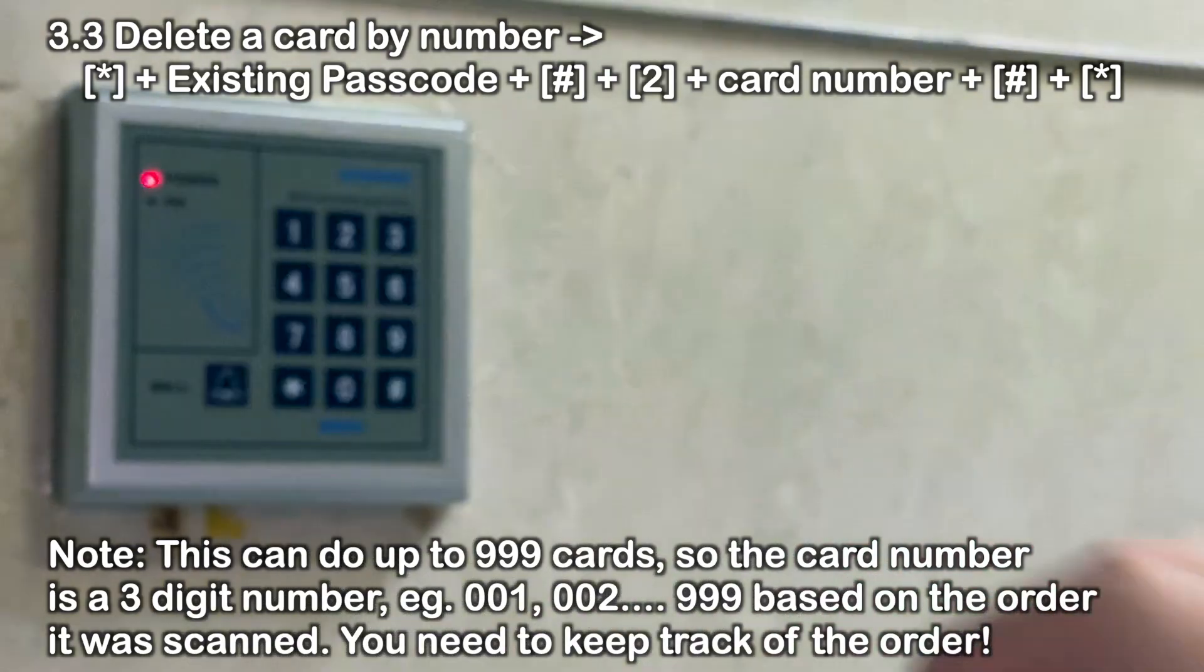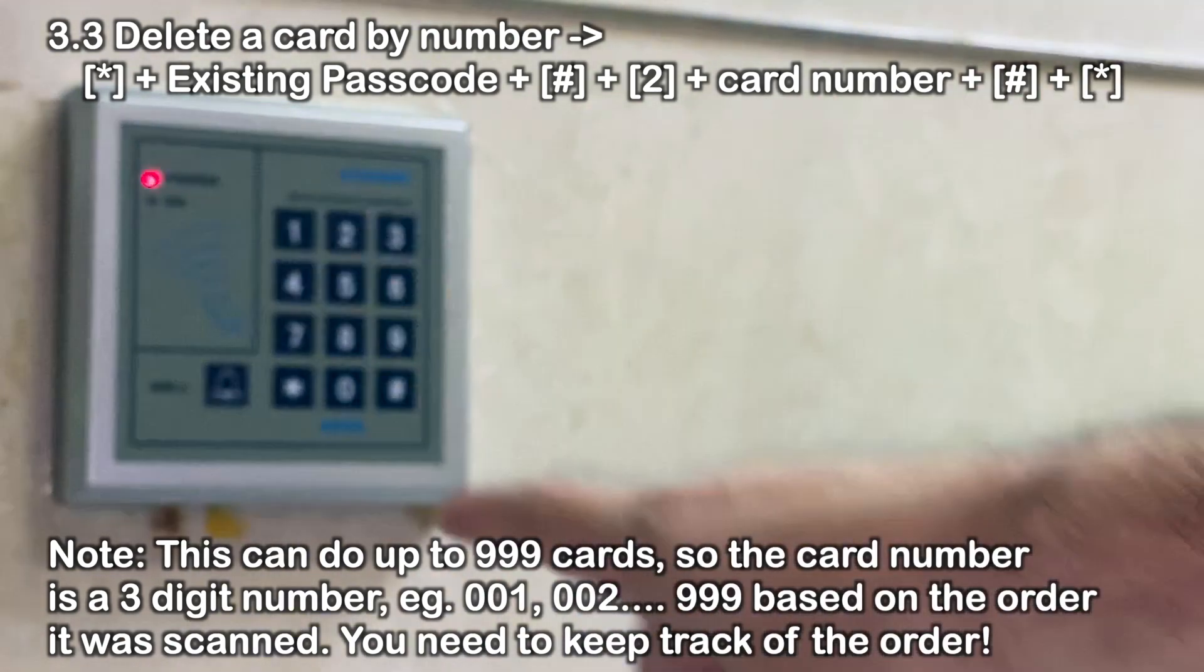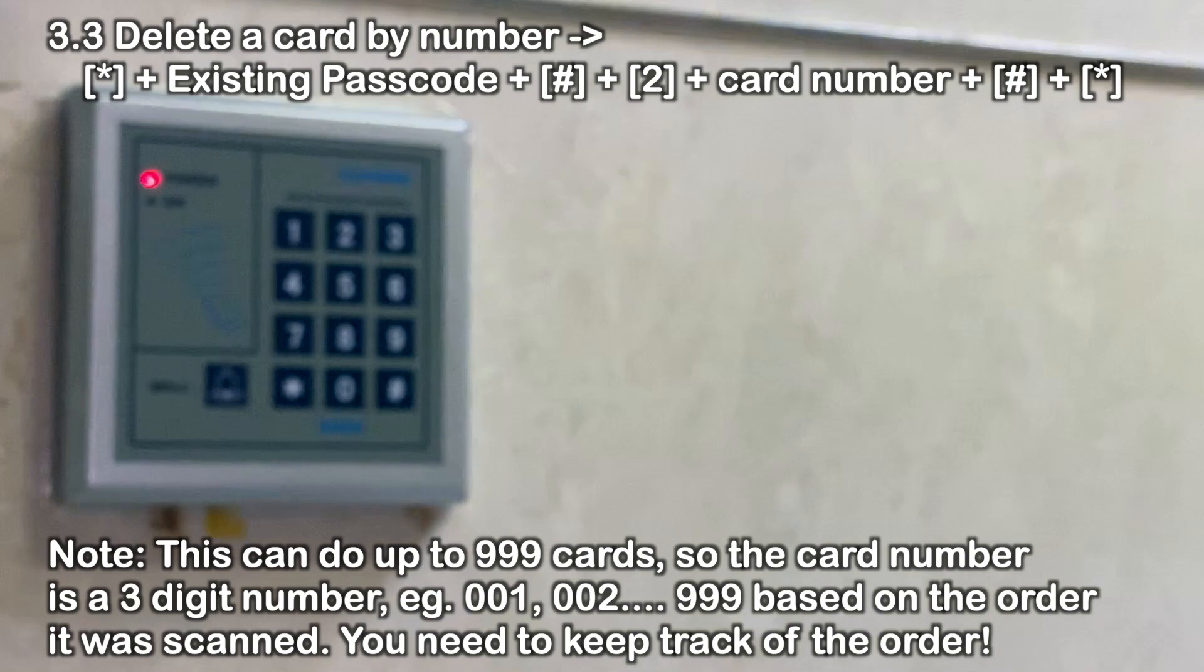The problem is there's no visual thing here to tell which card is which, so you really have to keep track of it and you might have some holes. And if you start getting to hundreds of cards, there's no verification of which card that you're adding when you add it. So it's kind of only good if you're in the tens of cards range maybe.